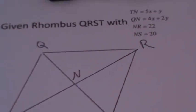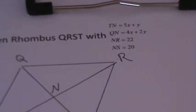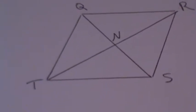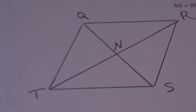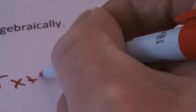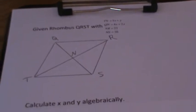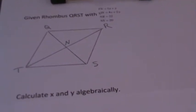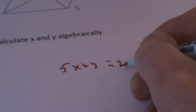Now, the first thing we'll notice is we've got TN is equal to 5x plus y. So TN equals 5x plus y is our first step, which we'll write down over here. And then that's equal to, we'll look at the rhombus again where we have TN is 5x plus y is equal to NR, which is 22. So we'll set that equal to 22.